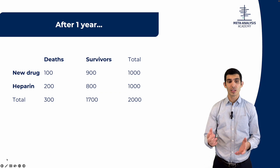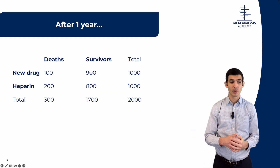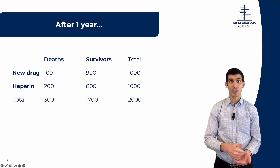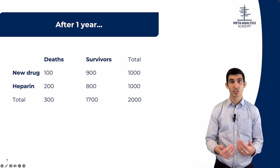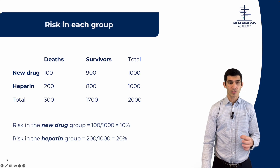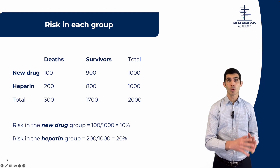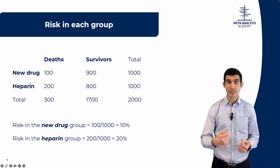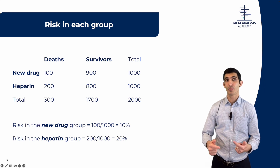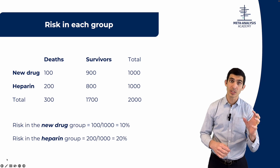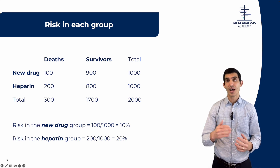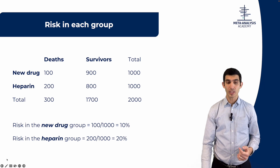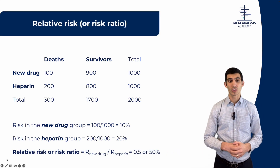After some period of time, 100 patients in the new drug group died out of 1,000, and in the heparin group, 200 patients died out of 1,000. So the risk of dying in the new drug group was 10%, and the risk of dying in the heparin group was 20%. A risk is the number of events divided by the number of patients who could have had that event — in this case, 100 died and 1,000 were at risk. We could even calculate a difference, but we're going to focus on the risk ratio.